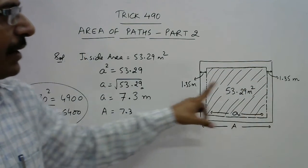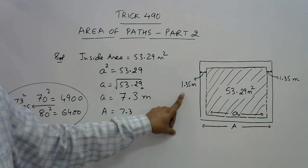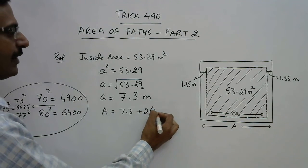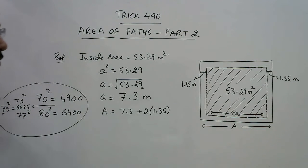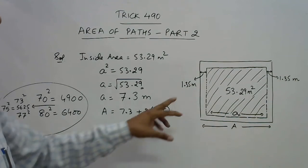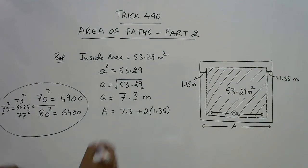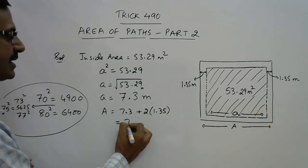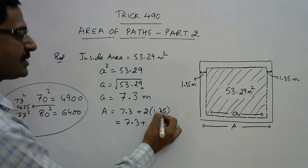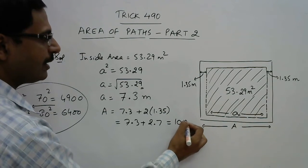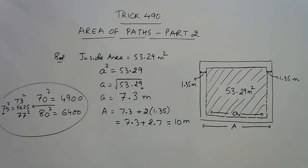What is the width of the track or the path? It is 1.35, so double of 1.35 will be added to the inside boundary - 1.35 on this side and 1.35 on other side. So A comes out to be 7.3 plus this is 2.7. When you add that you get 10 meters, and that is it.